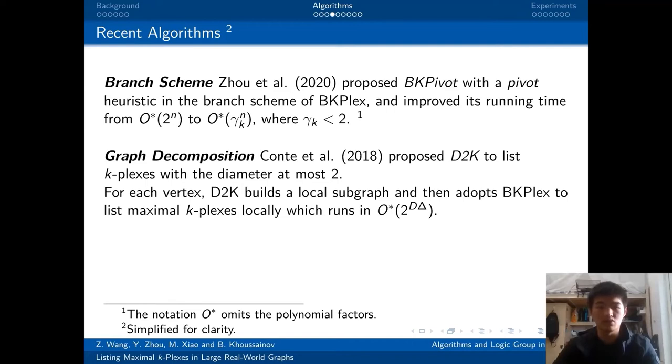The second one is D2K. The main contribution of D2K is its graph decomposition. D2K was proposed to list k-plexes with diameter at most 2. For each vertex, D2K builds a local subgraph, and it will adopt the BK-Plex to list maximal k-plexes locally. And D2K runs in O*(2^(d×delta)) in total.